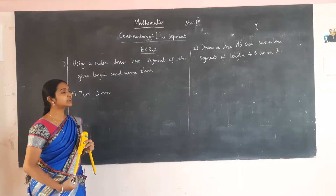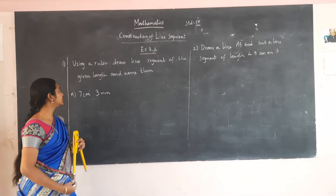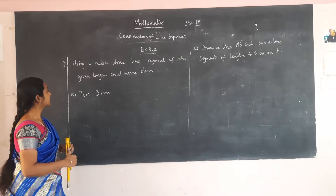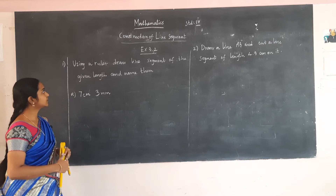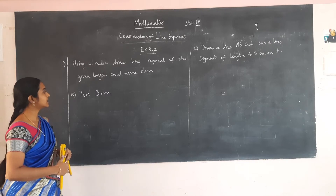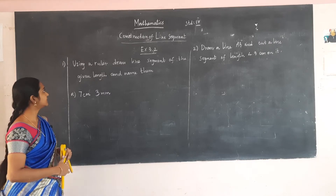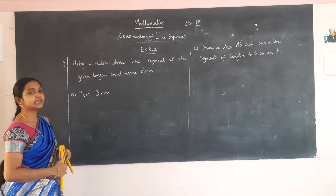Next, we are going to solve Exercise 3.2. The first question is: using a ruler, draw a line segment of the given length and name them.